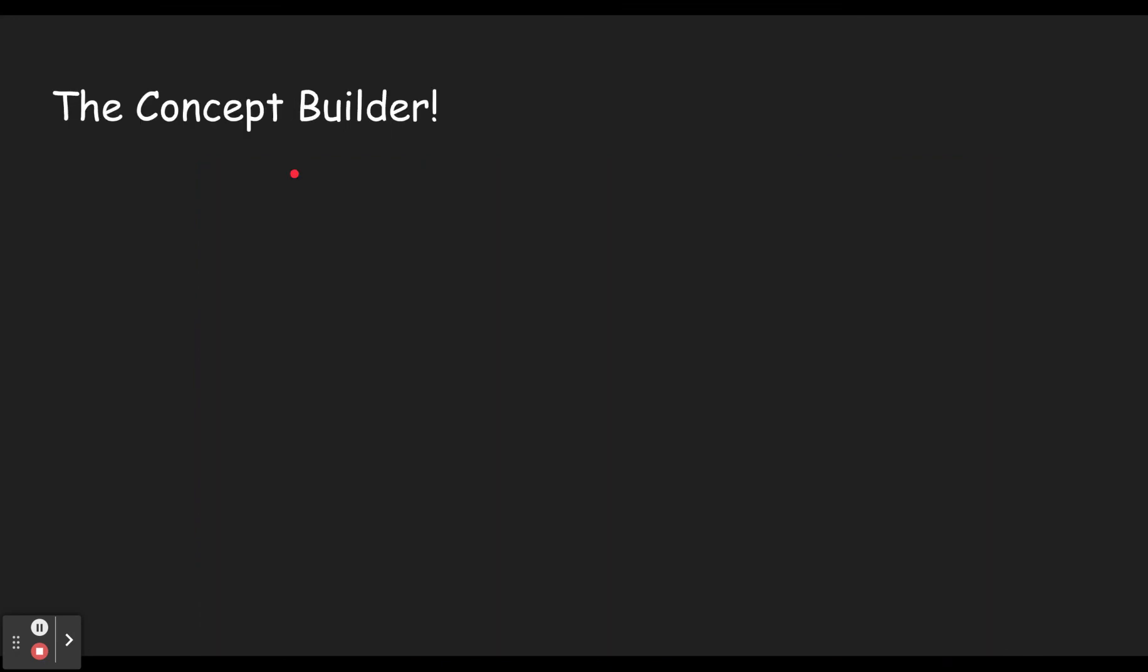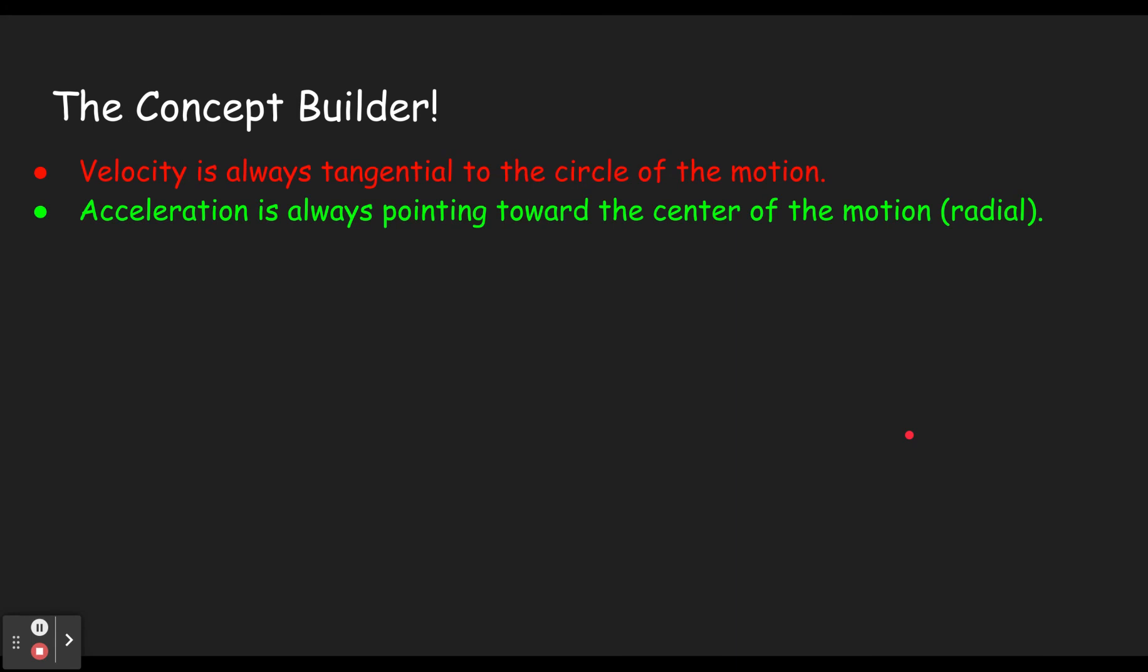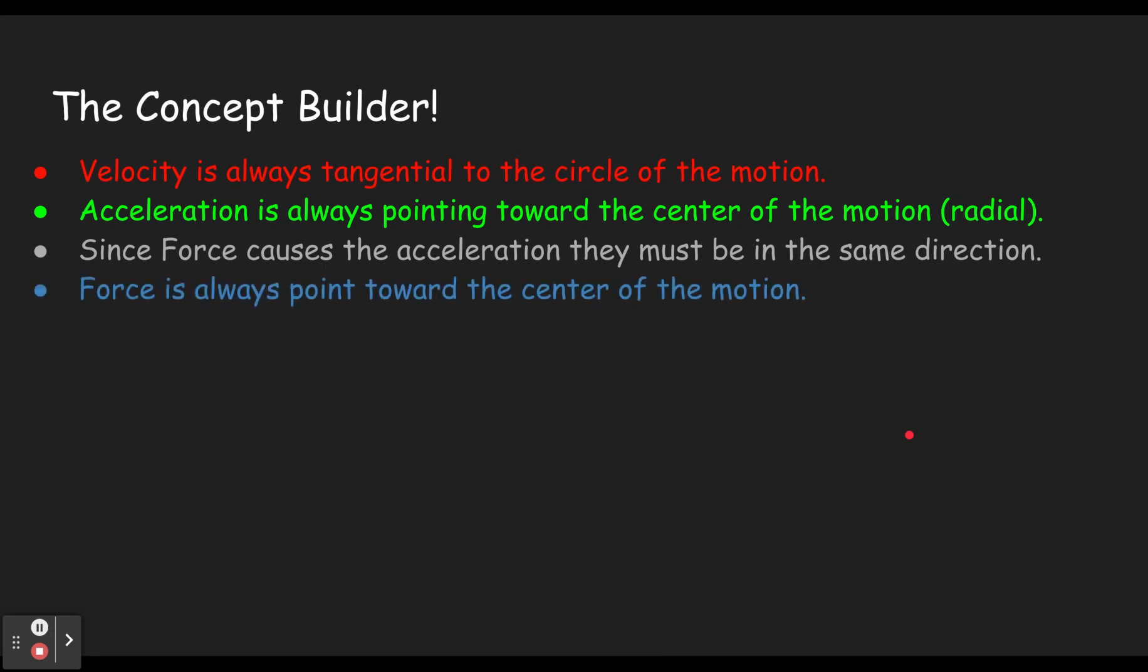I'm only going to give you one example from the concept builder because you don't need a whole lot because it's really the same thing three times. So the concept builder, the key things to remember: velocity is always tangential to the circle of motion. That's kind of like along the circle, you could say. It doesn't curve with the circle because if there was no force, it would keep going straight. So it's a tangent to the circle. Then we can see that the acceleration is always pointing toward the center of the motion. It's radial. And because force causes the acceleration, they have to be in the same direction. Therefore, the force is always pointing towards the center of the motion.